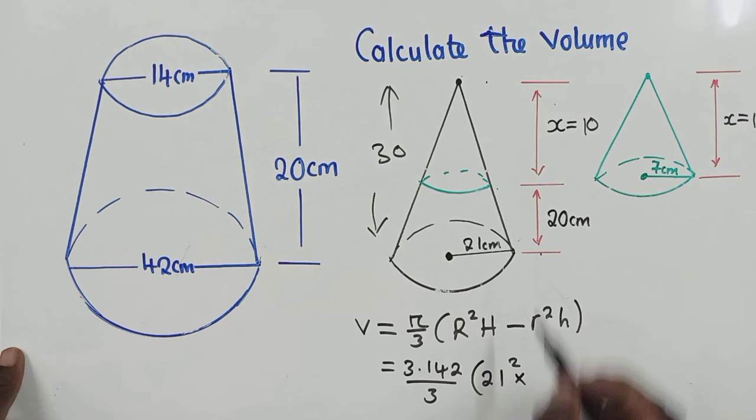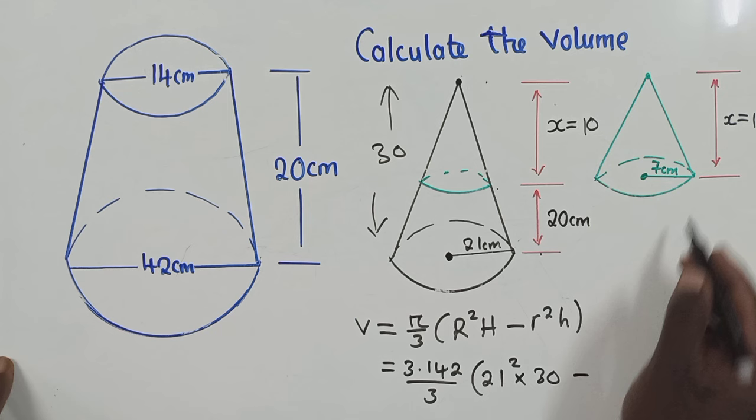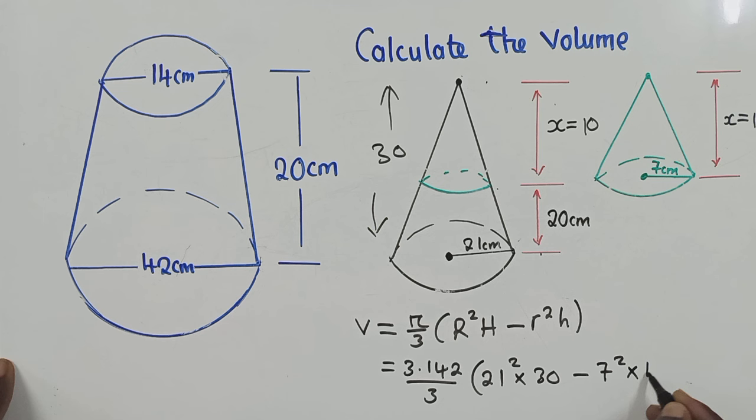Our pi is 3.142 over 3 and our capital R is 21. So you say 21 squared times our capital H height of the bigger cone is 30. Minus r from the smaller cone is 7 squared times 10, which is the height.